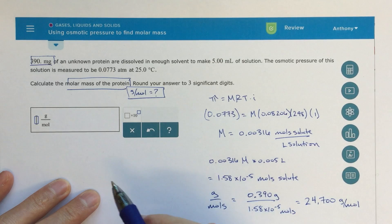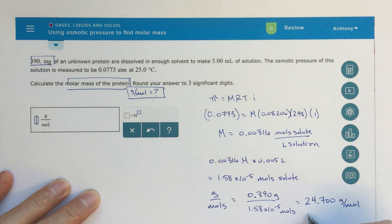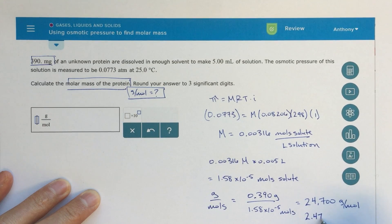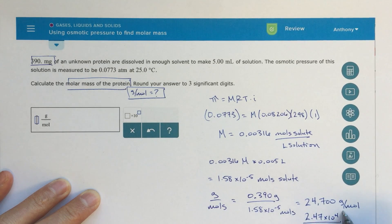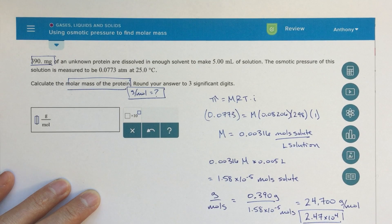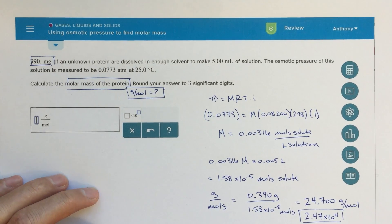Alex is going to want us to put this in scientific notation, so 2.47 × 10⁴ grams per mole — that's what I enter into the answer box. Hopefully that helps!